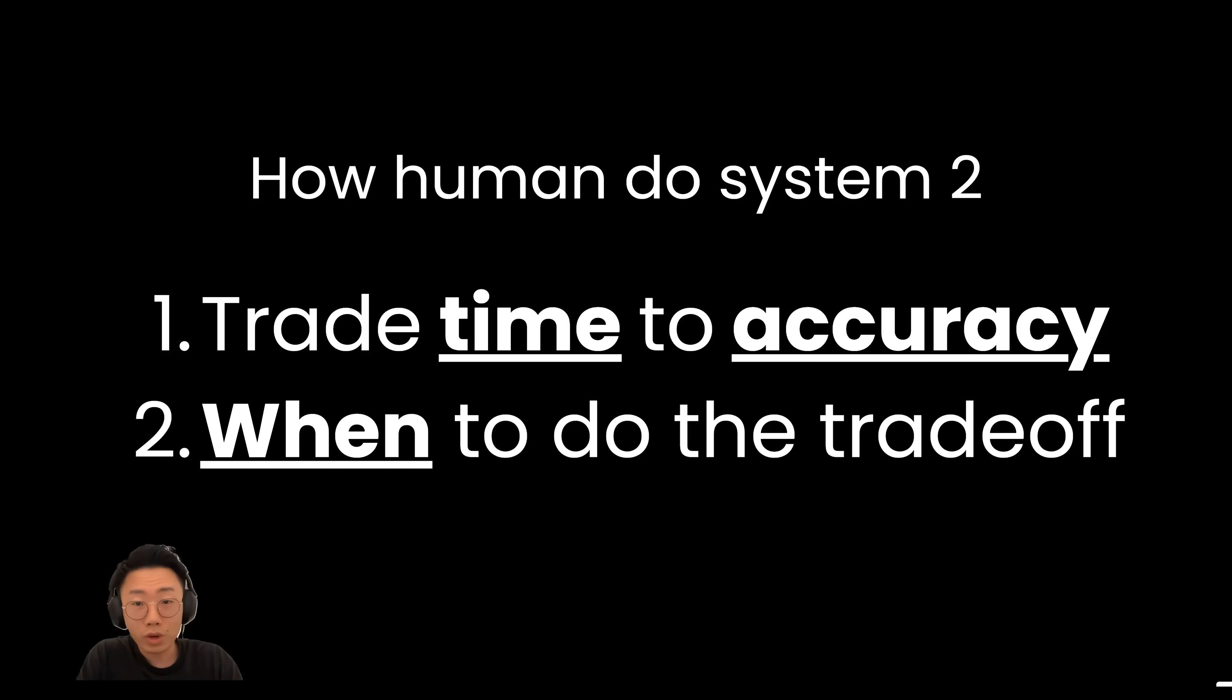And secondly, we also know when we should make this trade-off. So each person's brain is almost like an adaptive system that can switch between system one and system two effectively.